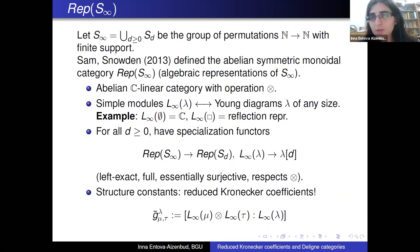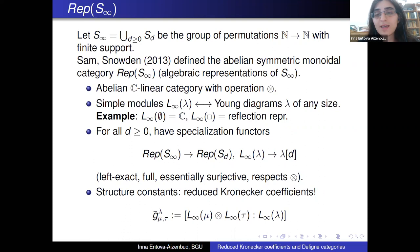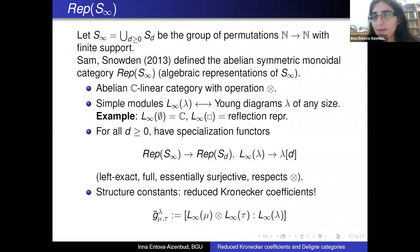The specialization functor sends simple representations of S_infinity to simple representations of S_D. The correspondence is: the simple representation corresponding to any Young diagram lambda is sent to lambda[D], which is lambda with a very long top row of size D minus its size. If this is not defined, it is sent to zero. One thing we immediately see is that if we consider the multiplicities of a given simple module inside the tensor product of two other simple modules for S_infinity, we get precisely the reduced Kronecker coefficients.